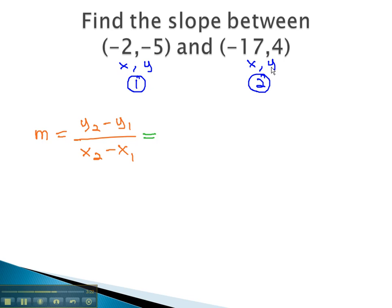y2 is the y from the second point. This would be 4. Minus y1, y from the first point, would be negative 5.